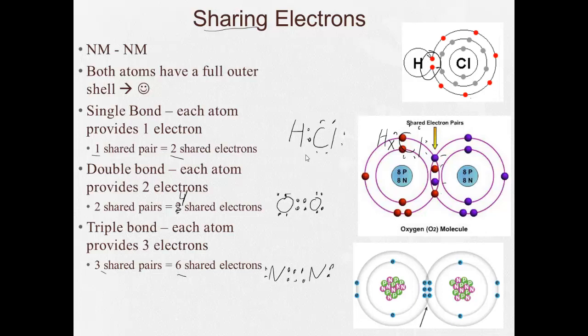Now, another way each of these can be drawn when we draw a Lewis dot structure is, we don't have to actually draw all the electrons. I can do H-Cl, and this line represents a pair of shared electrons, or two. Here, for a double bond, I can say O with two lines. Each line represents a shared pair of electrons. There's two lines, so there's two shared pairs, or four shared electrons. For the nitrogen, three lines for the triple bond.